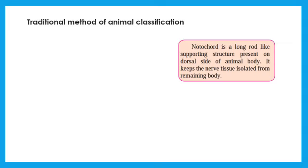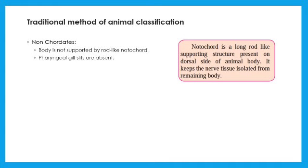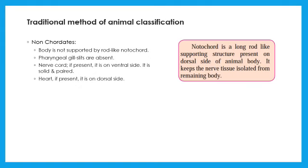Let us understand the characters of chordates and non-chordates. First, non-chordates. Non-chordates are less evolved animals. They don't have notochord. Pharyngeal gill slits are absent. Nerve cord, if it is present, it is double and solid. Heart, if it is present, it is on dorsal side.